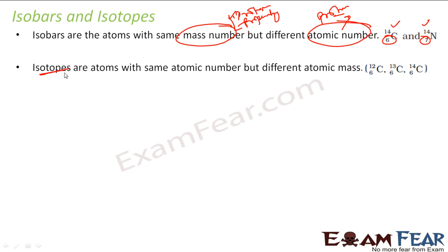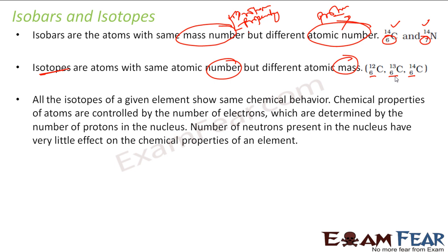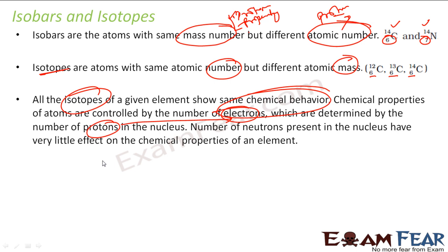Isotopes, on the other hand, are species which have the same atomic number but different atomic mass. Atomic number is same, proton is same, so property is same. All isotopes have the same chemical behavior. Why? Because chemical behavior is controlled by number of electrons and protons. Since they are all neutral, they have the same number of electrons and protons. The number of neutrons has very little impact on chemical properties.